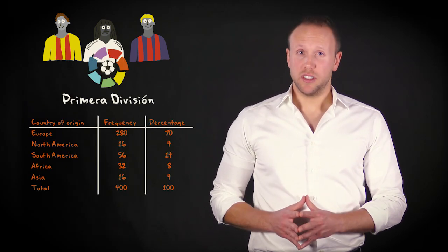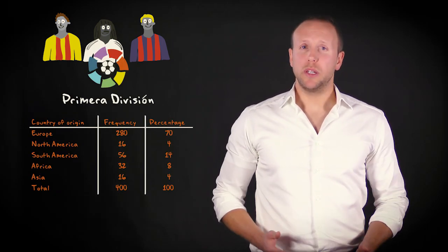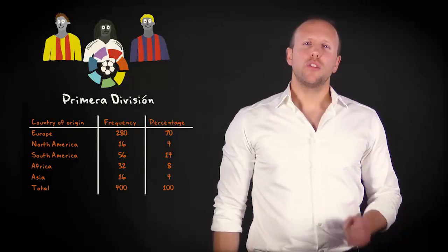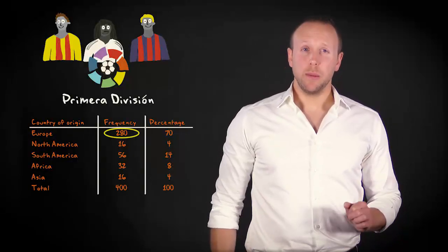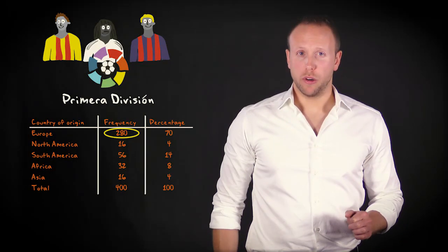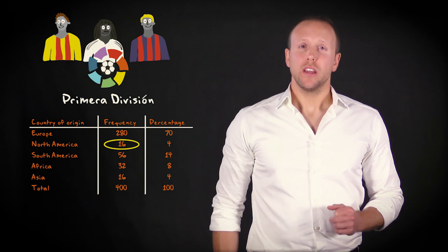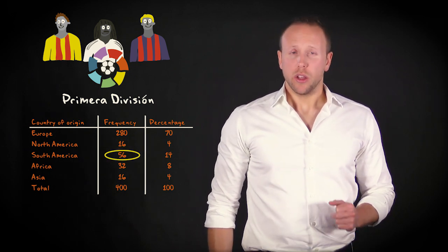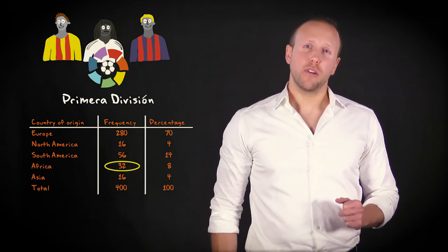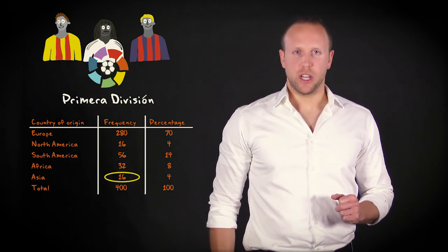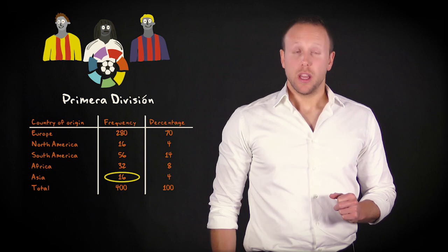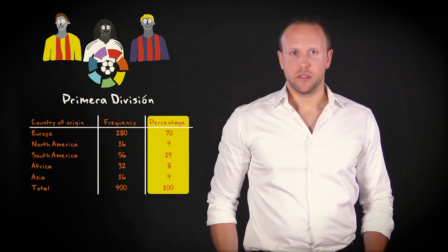Imagine I studied where the football players in the main football competition in Spain come from. This frequency table could be the result. You can see that 280 players come from Europe, 16 from North America, 56 from South America, 32 from Africa, and 16 players from Asia. I've also added the relevant percentages.